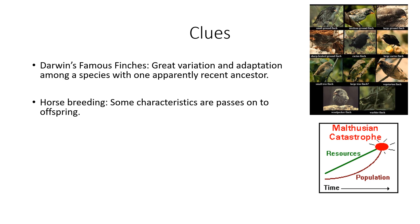Another thing Darwin had going for him was horse breeding. From his family's years of horse breeding, he learned that some characteristics from parents are passed on to offspring — not acquired characteristics as Lamarck said, but the characteristics they were born with. Things like color markings and size of the parents are passed on. So he had this idea of passed-on traits.